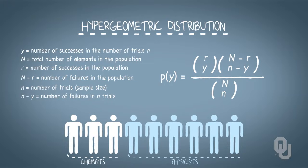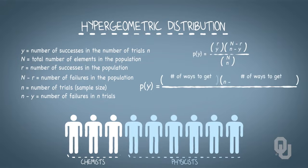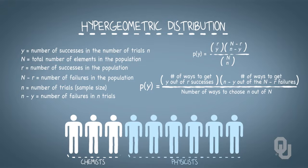The probability that random variable Y takes on the value little y is described with a classical probability. The number of ways we can witness little y successes and therefore n minus y failures in the numerator, and the total number of ways we can choose a group of n regardless of the number of successes and failures in the denominator.